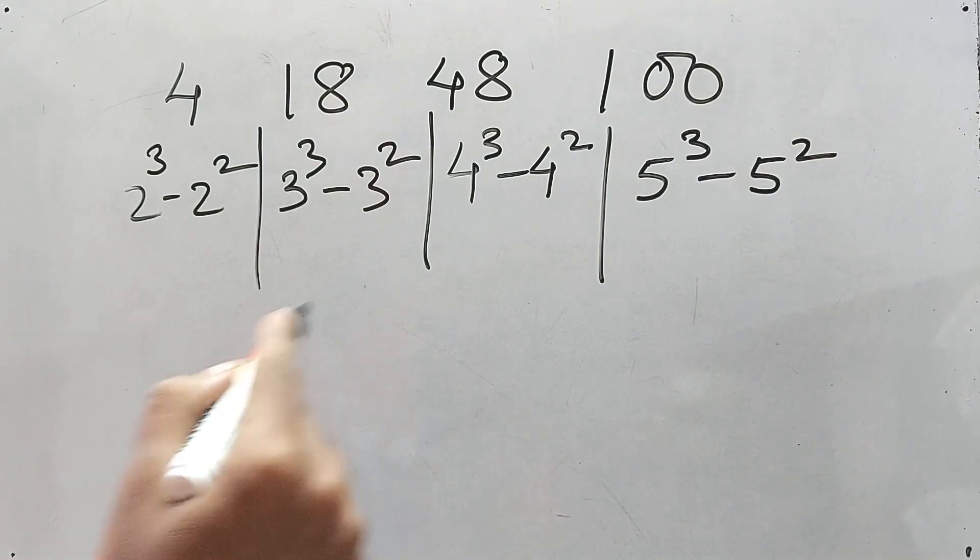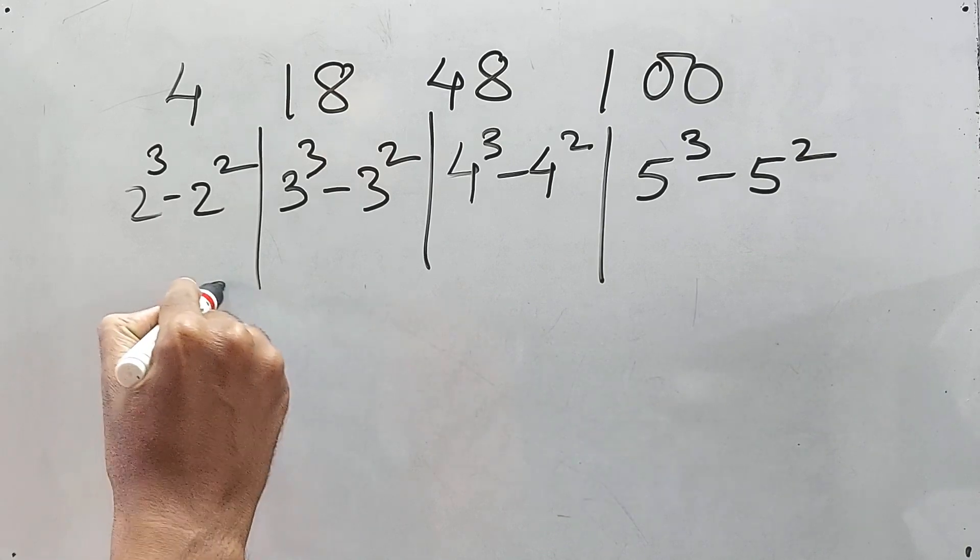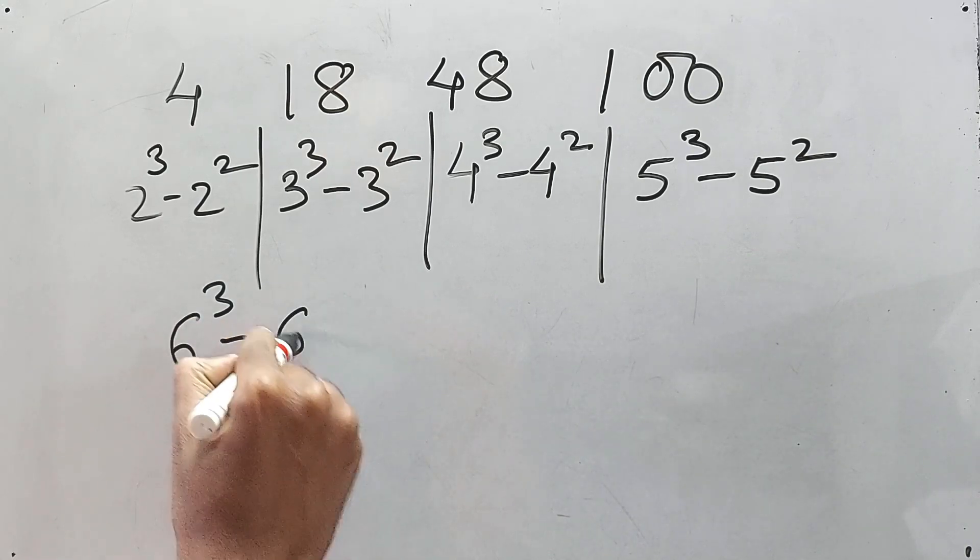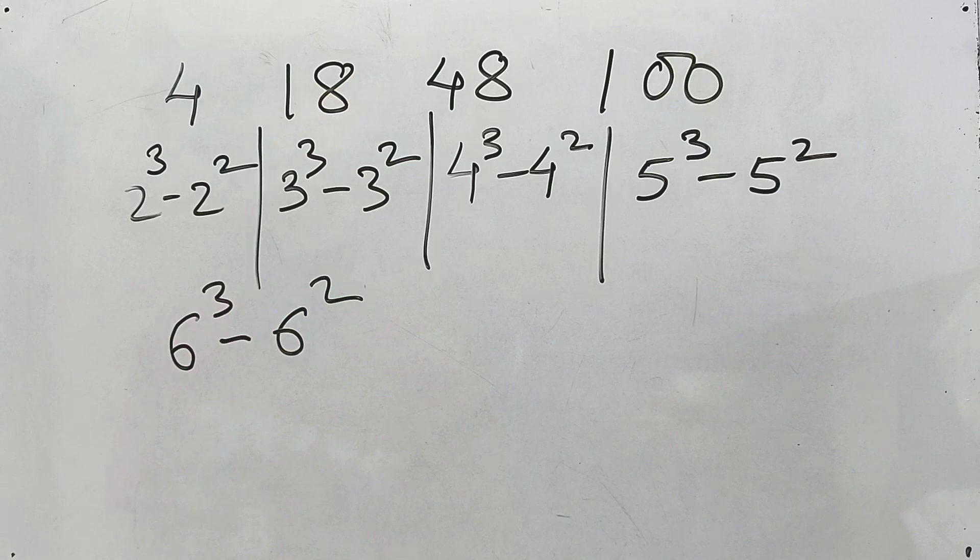Now what will be the next one? Next one, yeah definitely it will be 6 cube minus 6 square. Yeah, definitely we know 6 cube is 216. But if you forget this suddenly, I mean it's not coming into your mind, definitely there is a way out.